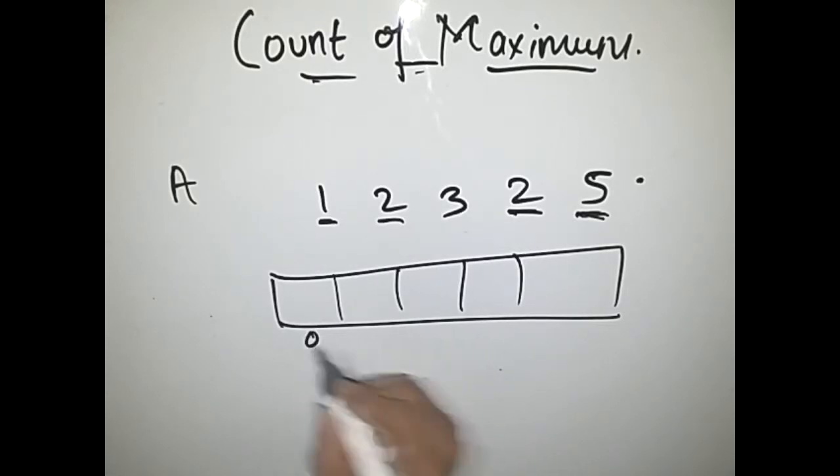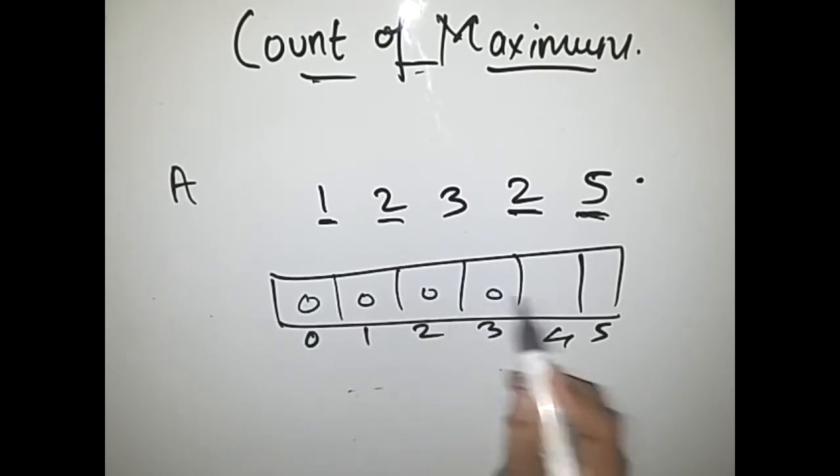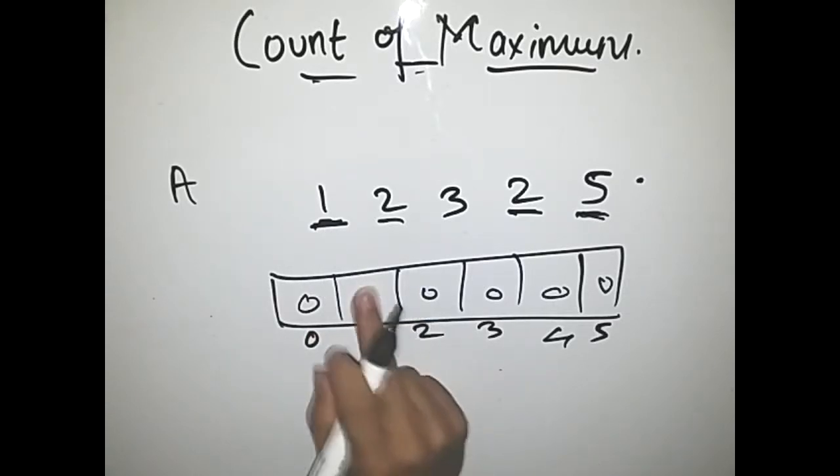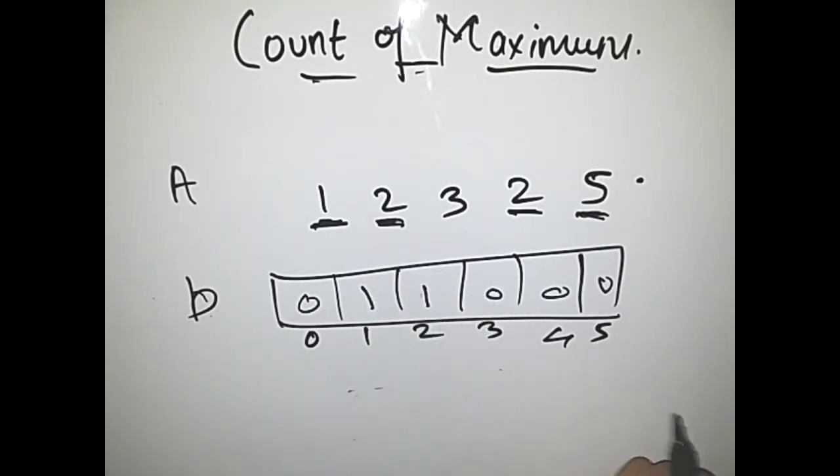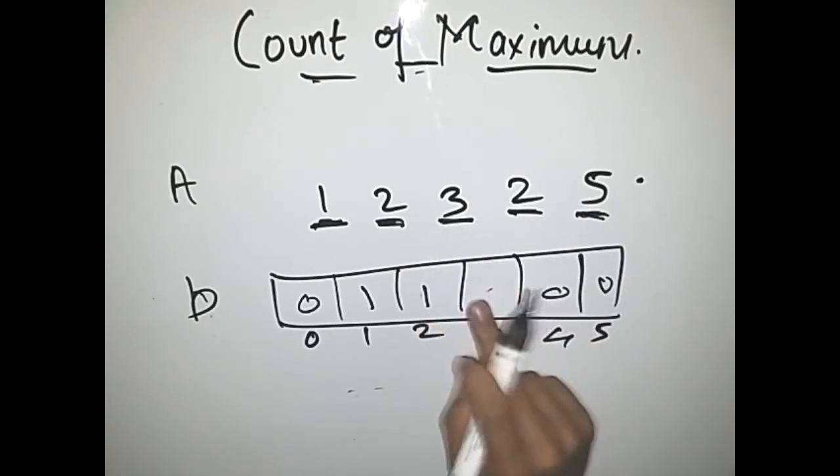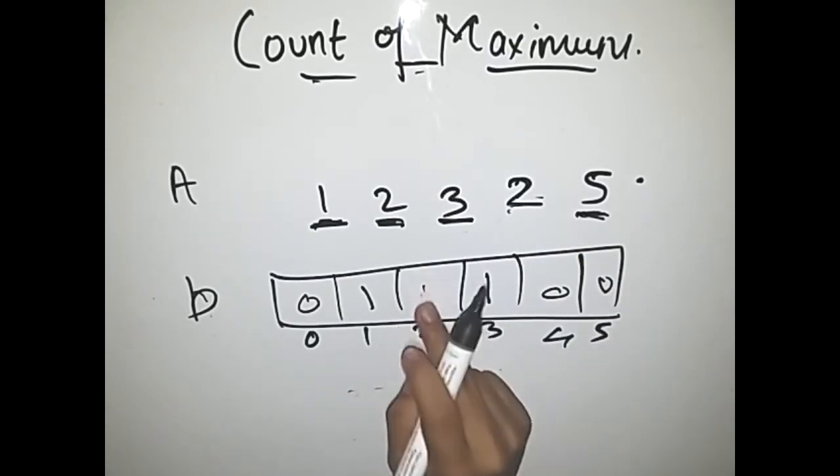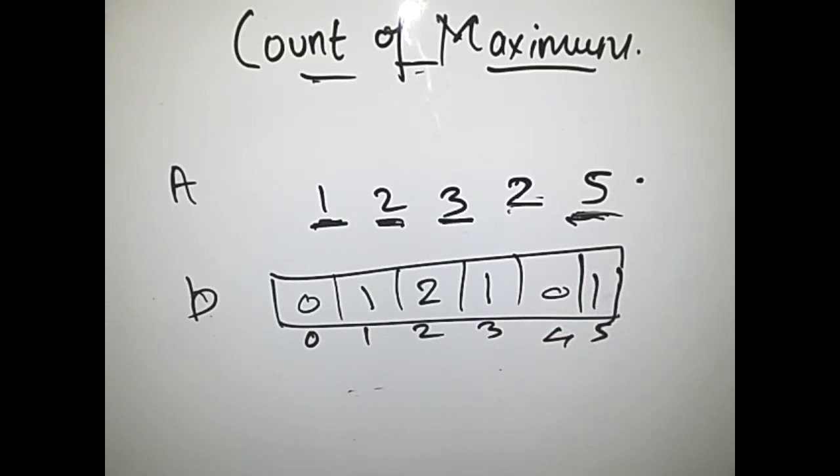We'll initialize each element with 0. As the input comes, as 1 comes as the input, we'll increment b of 1 by 1. Next input is 2, then we increment this element by 1. Then 3, then the input is 2, we increment it again so it becomes 2. This count specifies how many times the element has occurred in our input. The next input is 5, so we'll increment this value by 1.